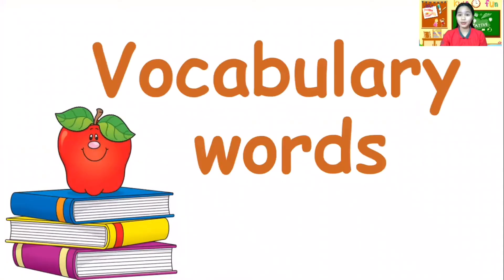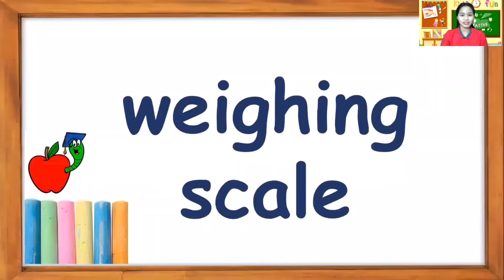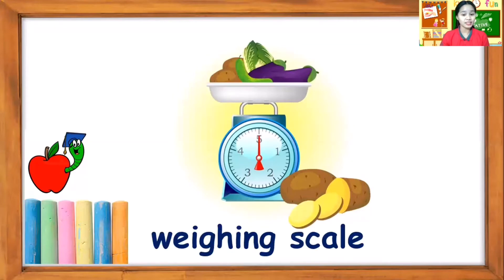Okay, before that, we are going to read your vocabulary words. The first word is weighing scale. Again, weighing scale. Very good. One more time. Good job. Okay, what is a weighing scale? This is a picture of a weighing scale. This is what we use to measure the mass of an object, to identify how heavy or light they are. Again, what word is this? Weighing scale. Very good.